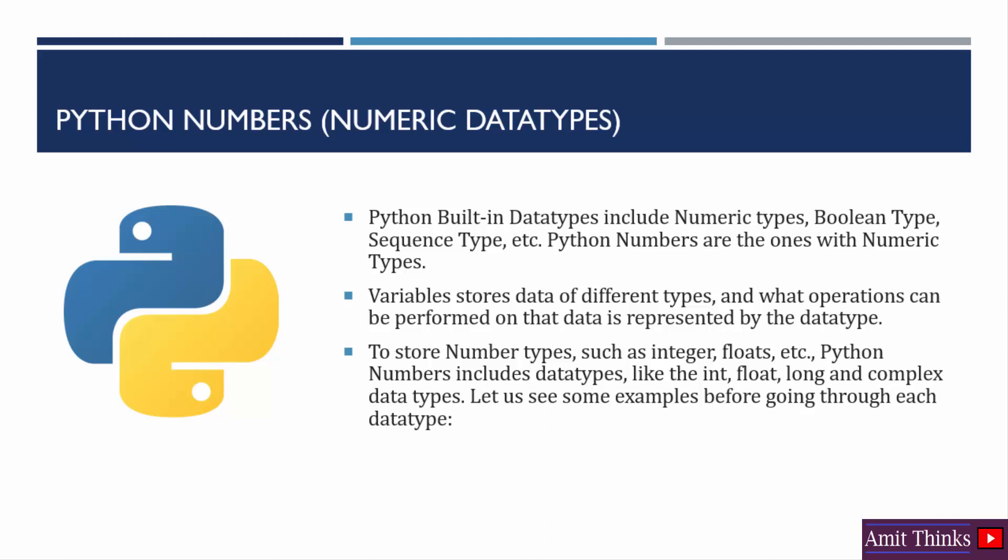Numeric types include integer, float, hexadecimal, octal, and others. You would be wondering what a data type is — variables in Python basically store data of different types: it can be int, float, string. The operations that can be performed on that data are represented by the data type. First we will see some examples, then we will move towards the numeric data types.